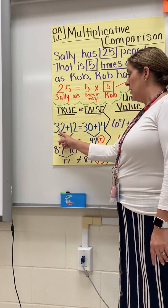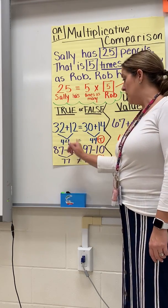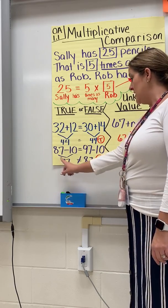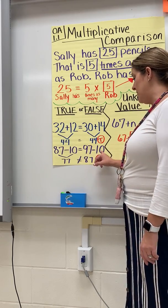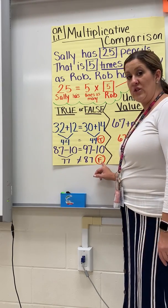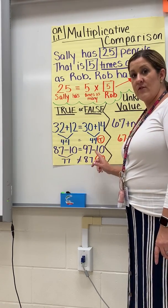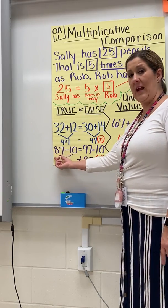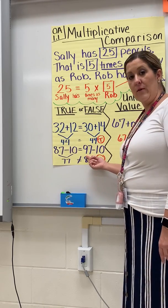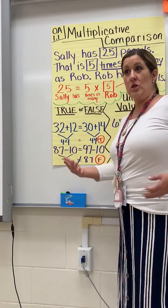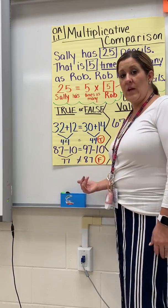In this case, 32 plus 12 is 44, and 30 plus 14 is also 44, so this equation is true. This one is 87 minus 10, which is 77, and 97 minus 10 is 87, so the equation here would be false. A lot of times they will be obvious — it's obvious that taking away 10 from 87 is not going to equal the same thing as taking 10 away from 97. So first look at it: is it obvious it's true or false? Then solve to check.